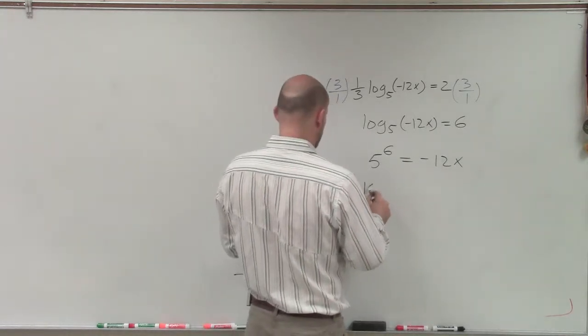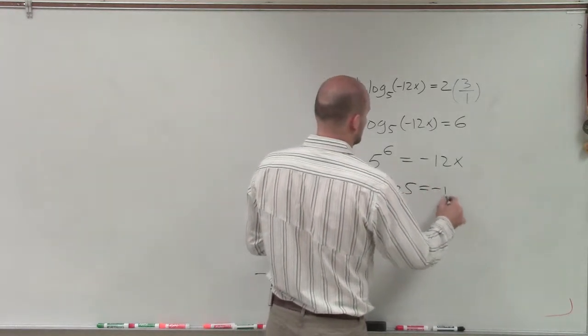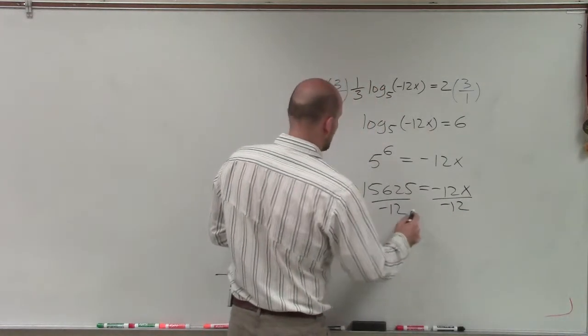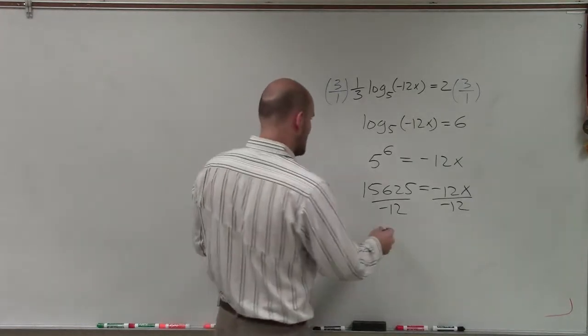And that's going to be 15,625 equals negative 12x. Then I divide by negative 12 on both sides.